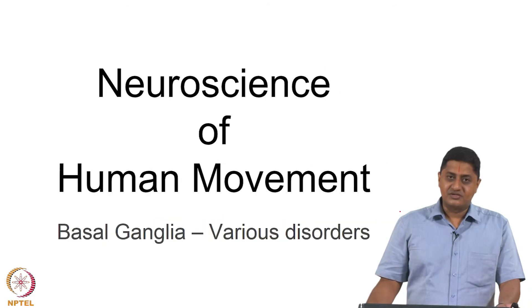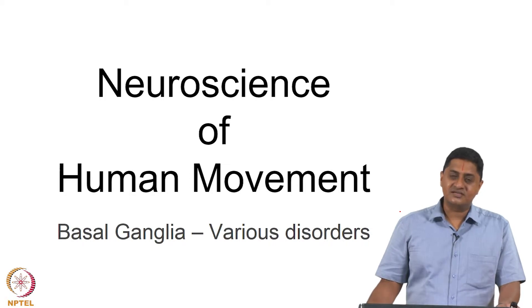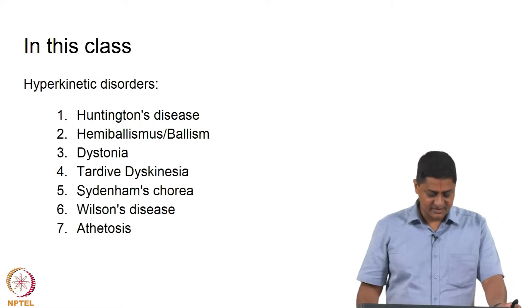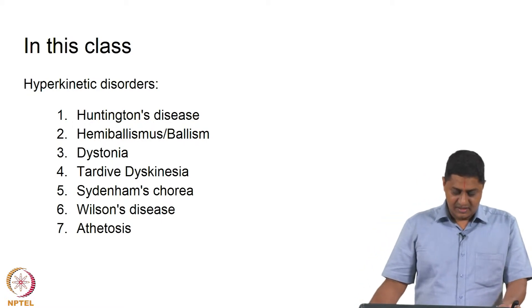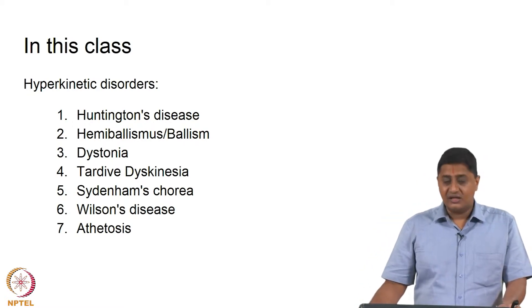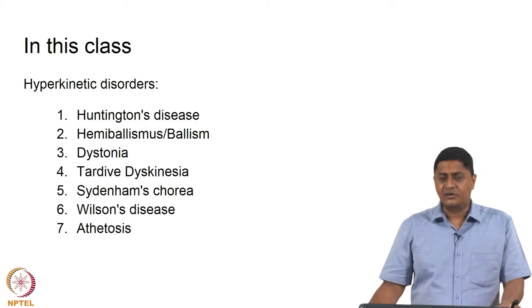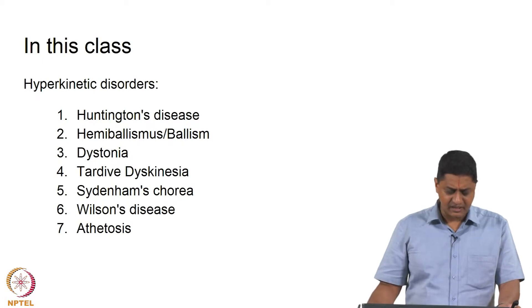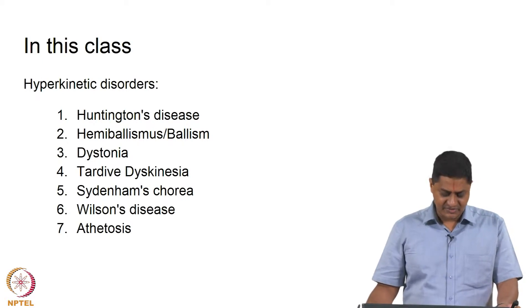Welcome to this class on Neuroscience of Human Movement. In this class we will discuss other disorders of Basal Ganglia — disorders other than Parkinson's disease. Specifically, we will discuss hyperkinetic disorders, in particular Huntington's disease and ballism, and other disorders such as dystonia, tardive dyskinesia, Sydenham's chorea, Wilson's disease, and athetosis.